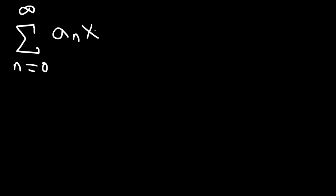In this video, we're going to talk about power series. Here's an example that starts from 0, goes to infinity. A power series is basically an infinite series with the variable x in it, and x is raised to the n power. This is a power series that is centered at 0, so c is equal to 0 for this one.